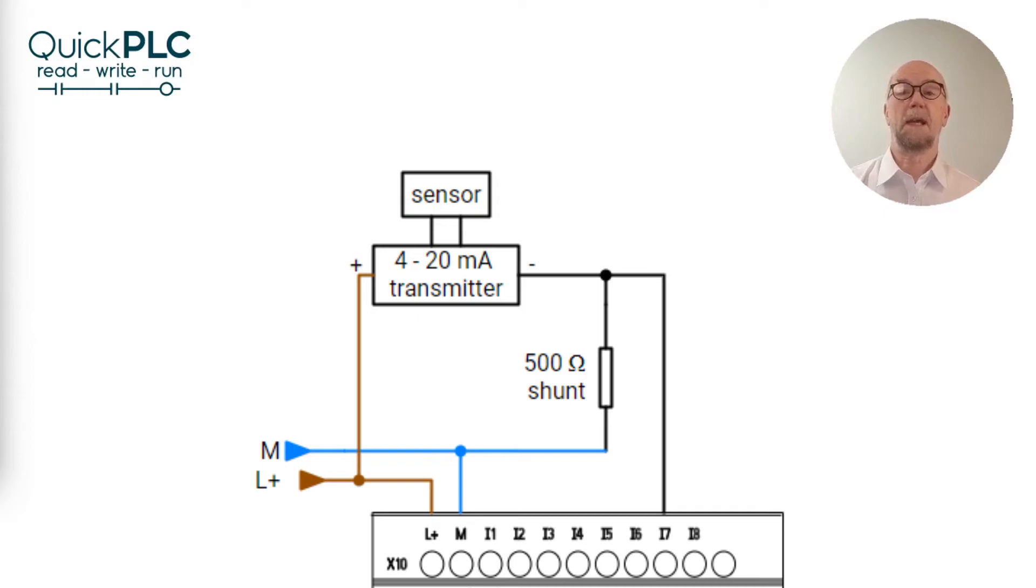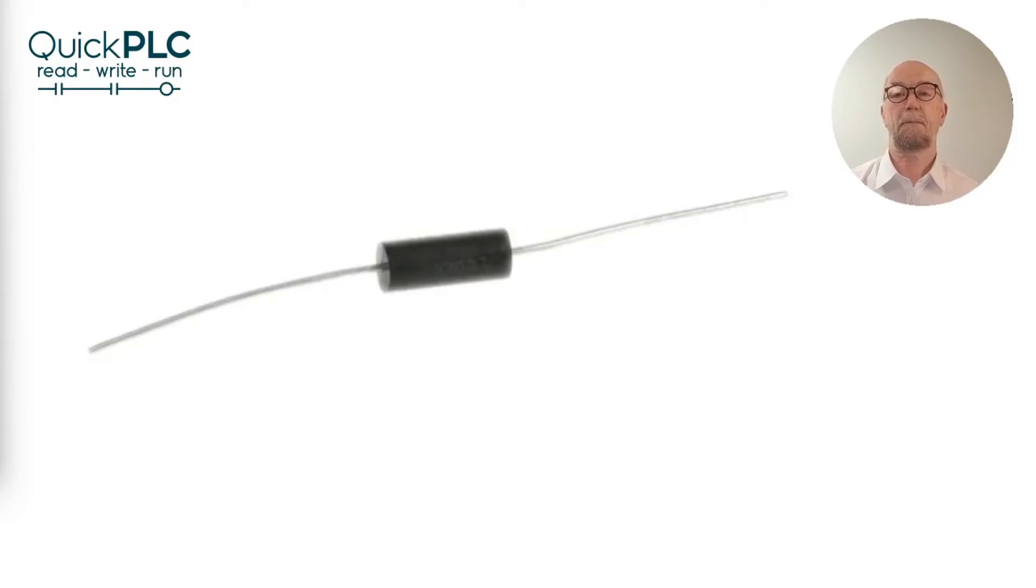Note that four milliamps into 500 ohms will give us two volts minimum. So our internal digital reading will be in the range of 200 to 1000. Various companies make a 500 ohm 0.1% tolerance high stability resistor suitable for this application. And they cost only a few euro which is a lot less than the cost of an analog input module.